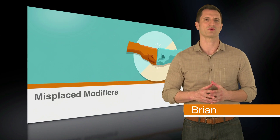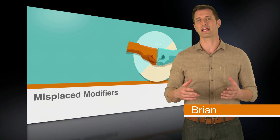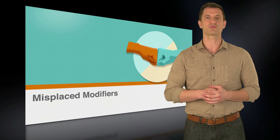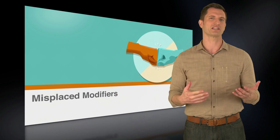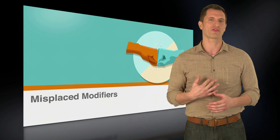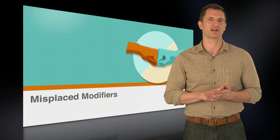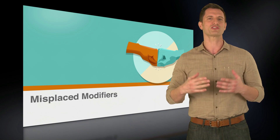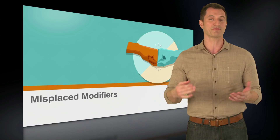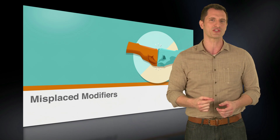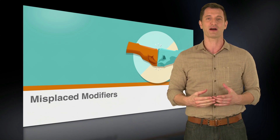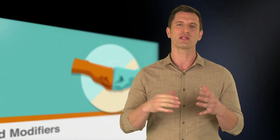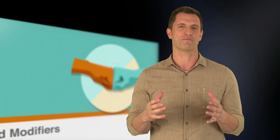Many of us write sentences with misplaced and dangling modifiers all the time because we use them in everyday speech. Sometimes we interrupt a thought with a modifier in the wrong place because we just remembered to mention it, or we don't include our subject because it's implied in the context of a conversation and our modifiers are left dangling in the wind. That's not going to fly on the SAT, so let's talk about how to curb that habit now.